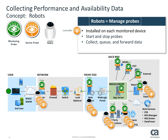Every robot always has three service probes that manage its primary tasks: controlling the probes attached to the robot — which includes starting and stopping them at the required times — using the robot's controller probe; collecting, queuing, and forwarding the probe messages using the spooler probe; and providing a simple database service for its probes. This allows the robot to store data for threshold monitoring and data trending, and ensures collected data survives power outages using the HDB probe.